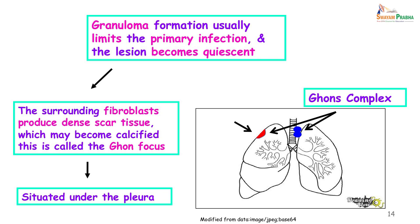The AFB in the alveoli proliferate and a granuloma is formed. This granuloma formation limits the primary infection and the lesion becomes quiescent. The lesion is surrounded by fibroblasts which produce dense scar tissue that becomes calcified, giving the appearance of a Ghon focus, which is usually subpleurally arranged. This is what is seen in most children.